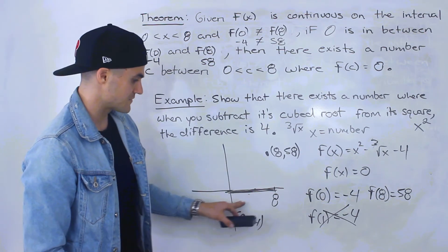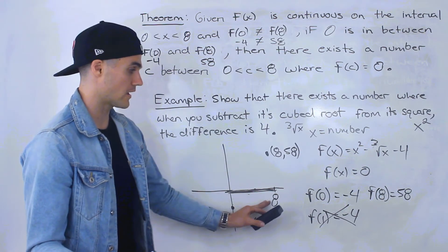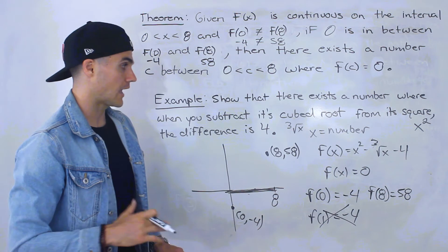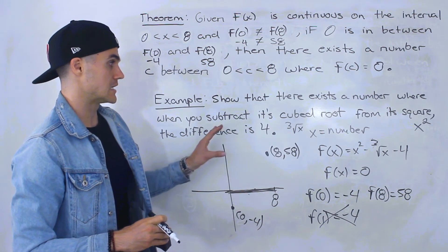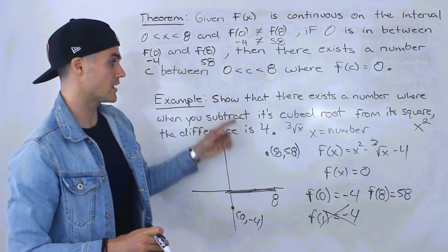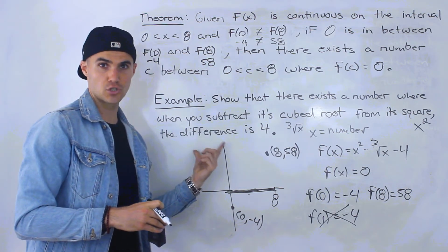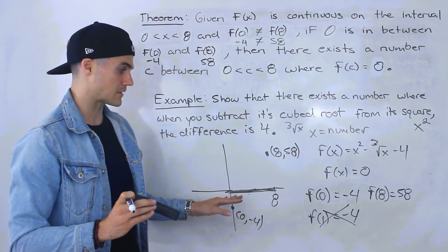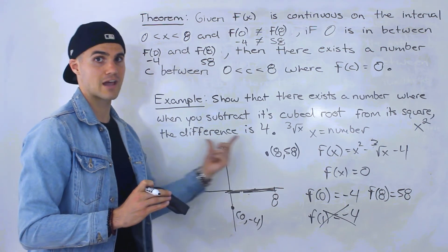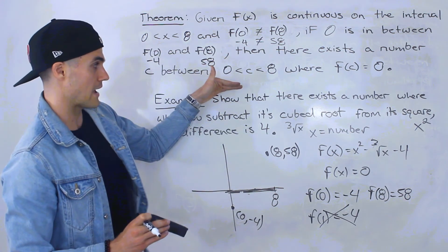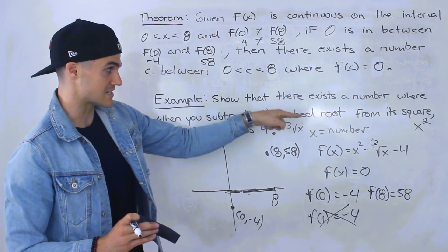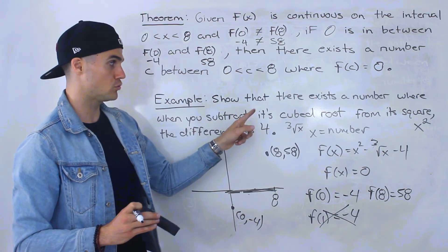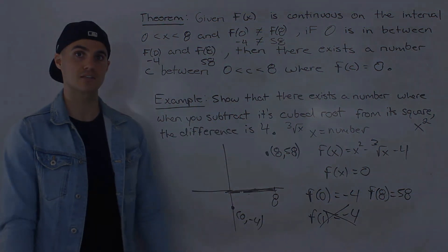There may be multiple x-intercepts, but there is definitely at least one. We've shown that the original equation x squared minus the third root of x equals four has some x value between 0 and 8 making the left side equal the right side. Returning to the original description: there exists a number between 0 and 8 where, when you subtract its cubed root from its square, the difference is four.